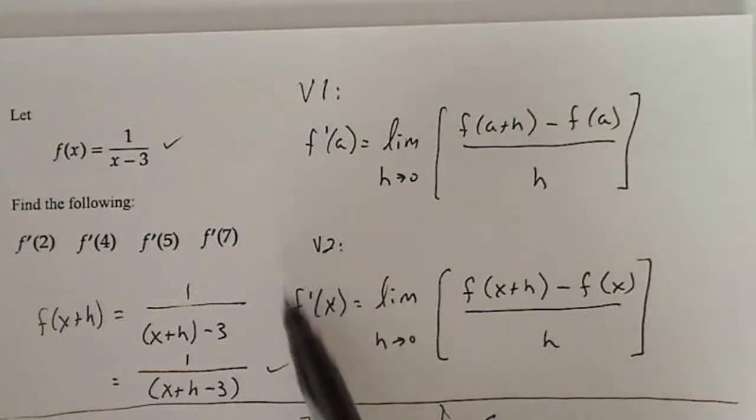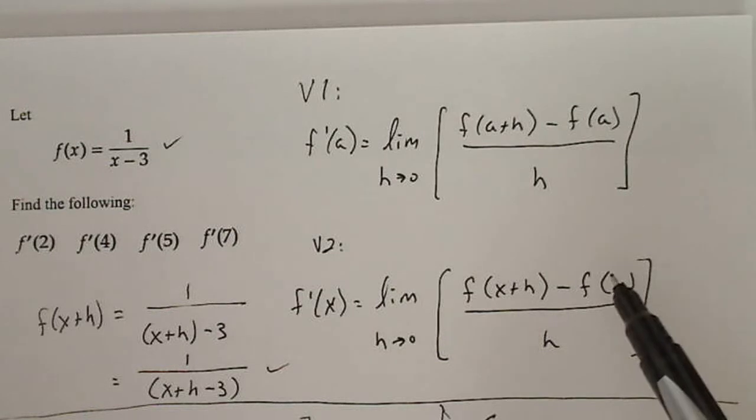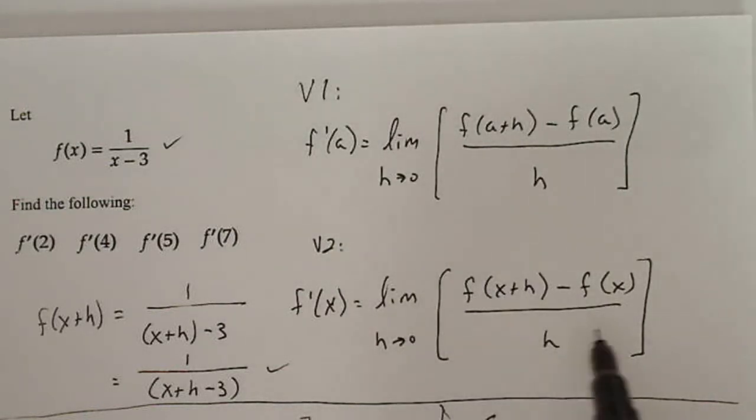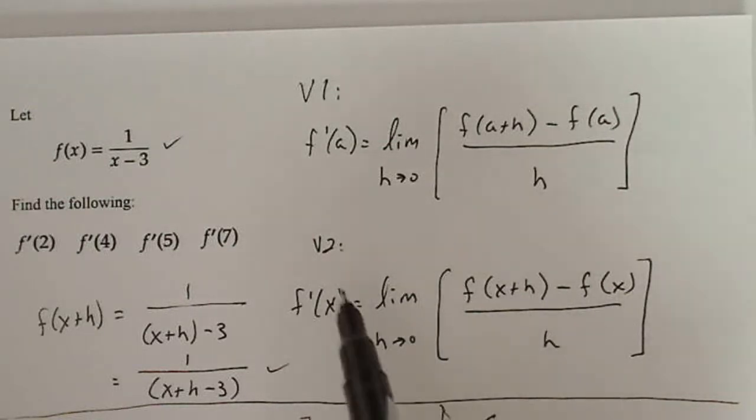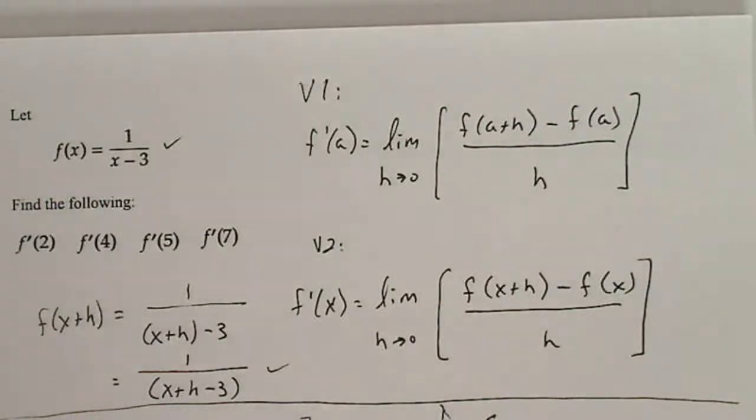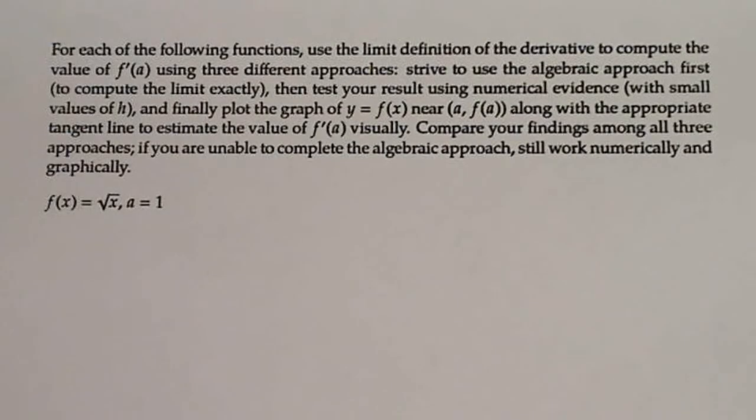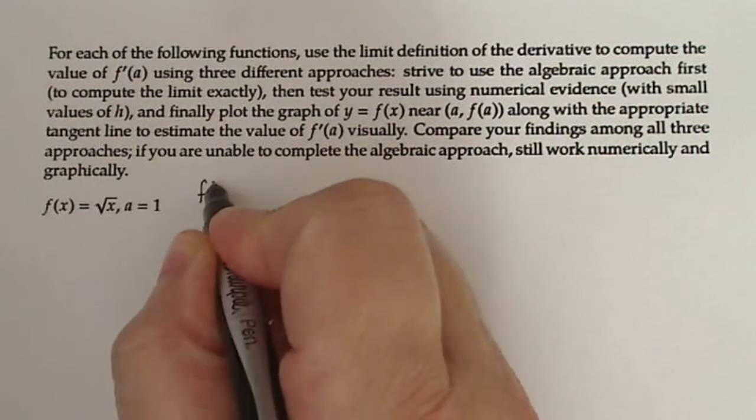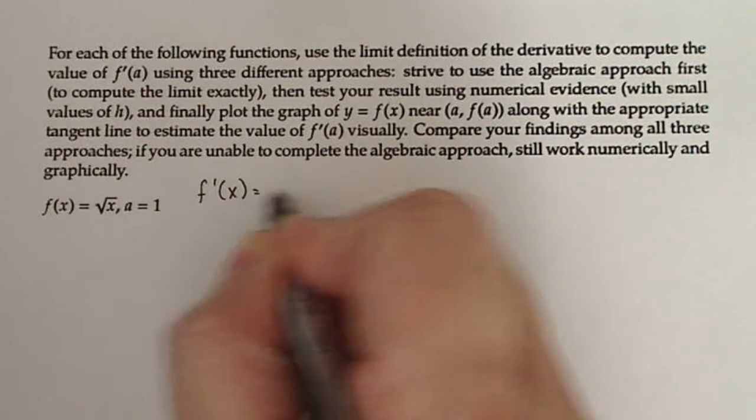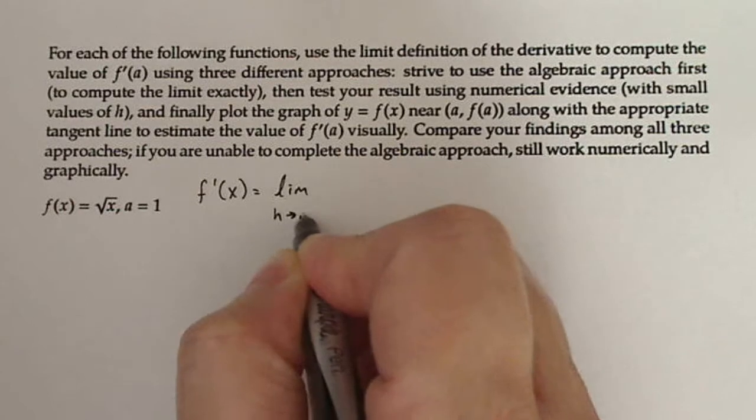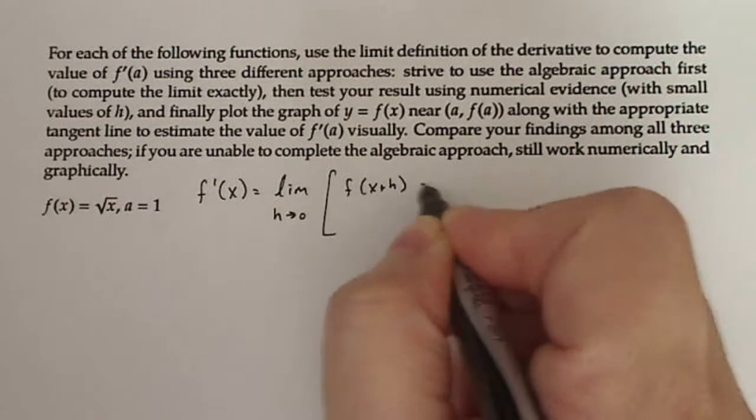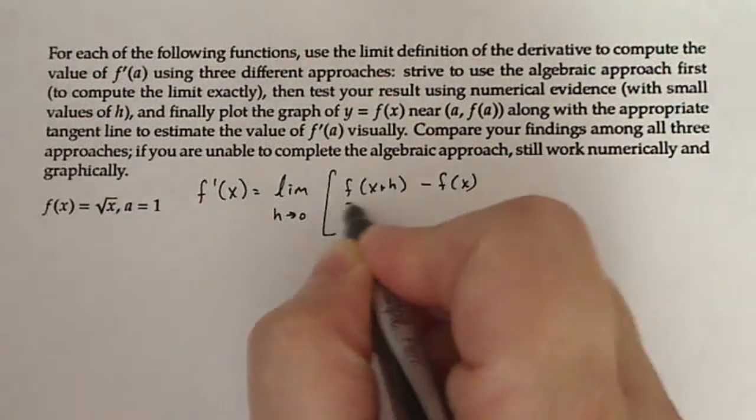Now I tend to always use the derivative function as opposed to putting in a particular number here. And the algebra will be a little bit better to see if I just use this formula. So I'm going to find the derivative function first and then plug in one. Okay, so let's use that. That means that to find the derivative function, I have to say that f prime of x equals the limit as h goes to zero, f of x plus h minus f of x all over h.